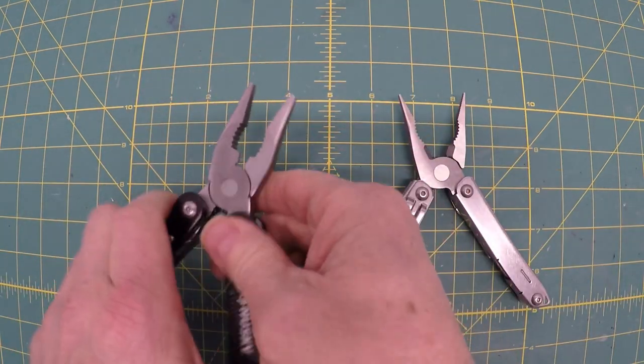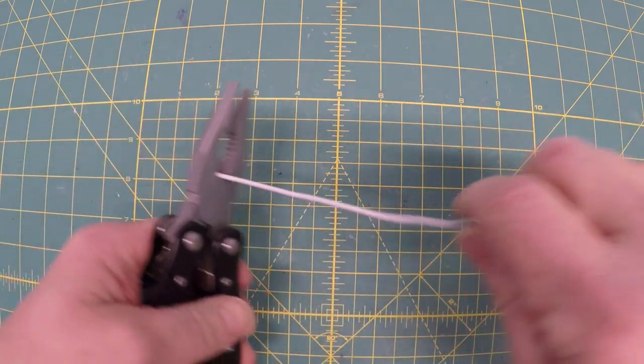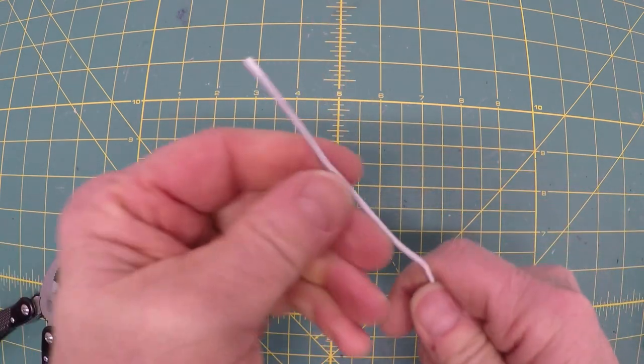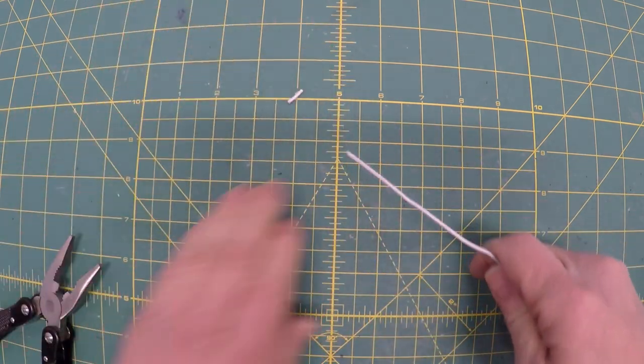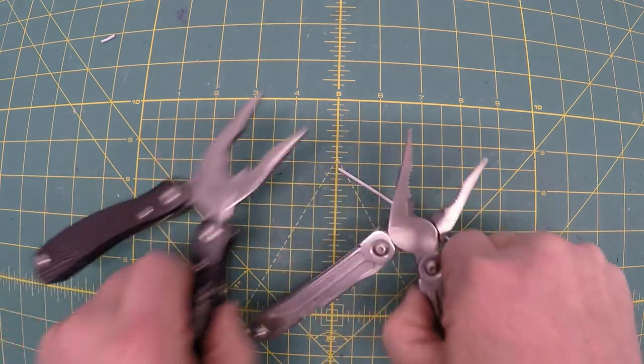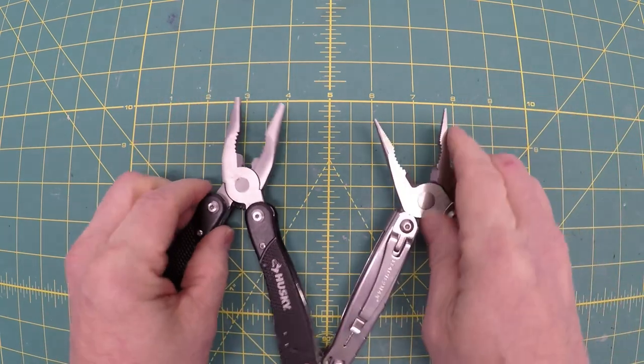Pliers. Very functional. First test we're gonna do is a coat hanger cutting test. Take a piece of coat hanger. This is about 16 gauge wire. Came off pretty easy. There's the little cut. Worked out pretty good. Now let's test the Leatherman. About the same. Not much different there as far as the number of grips and the cutter goes.